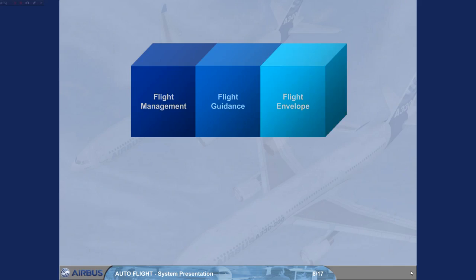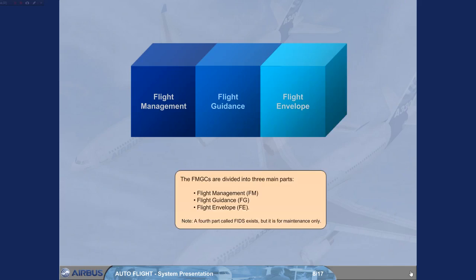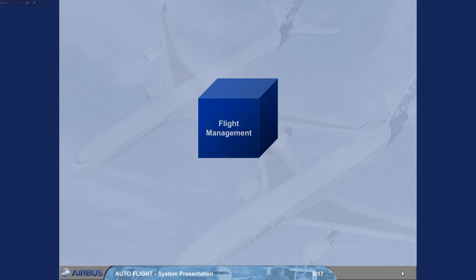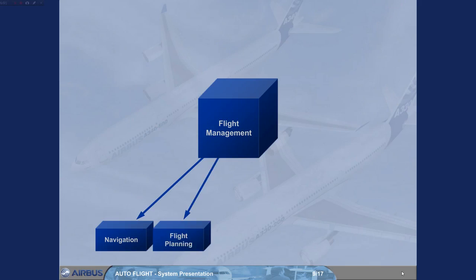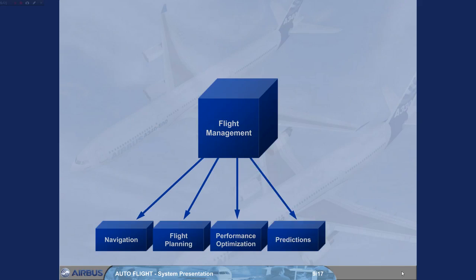The flight management part of the FMGS controls the following functions: Navigation — the position of the aircraft and the estimated accuracy of this position. Flight planning — the flight plan computation. Performance optimization — costs, speeds, and altitude optimization. Predictions — accurate estimates for waypoints, altitudes, speeds, fuel, destinations, and alternates. And finally, display management — the control of information to the EFIS system to display autoflight modes and navigation information.